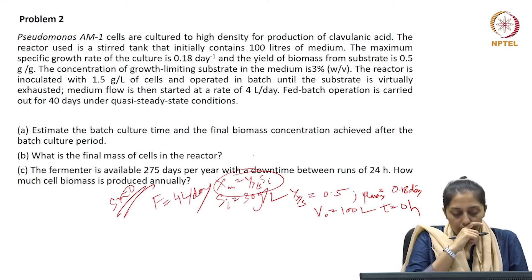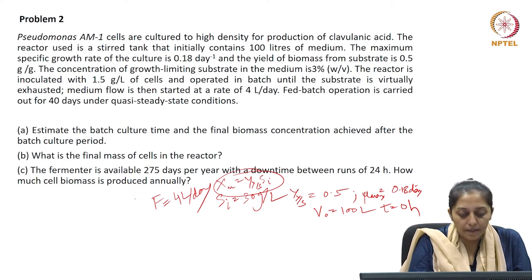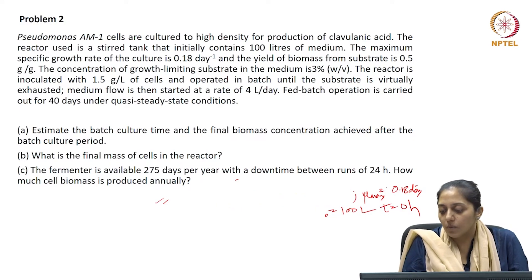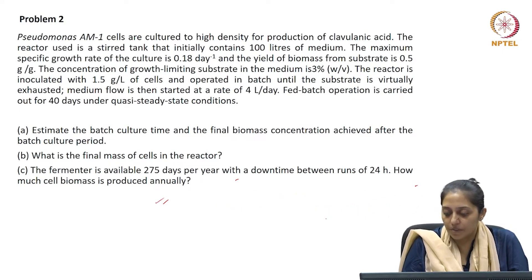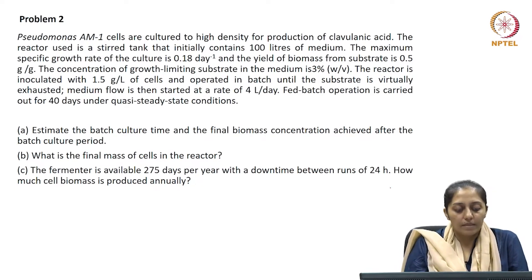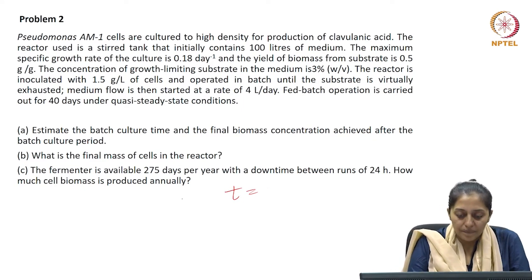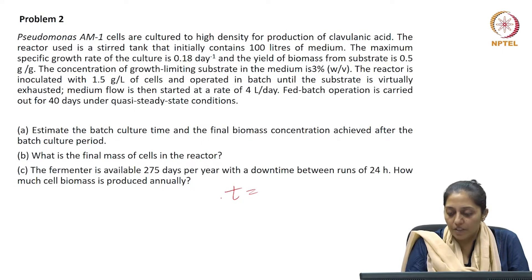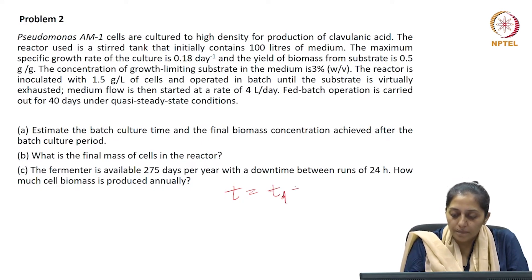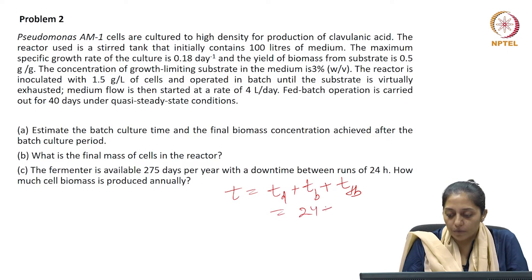The third part states the fermenter is available for 275 days per year with a downtime between runs of 24 hours. The total time taken to achieve 4040 grams in one single fed batch process is: downtime plus batch time plus fed batch time, which is 24 hours plus 13.3 days plus 40 days.